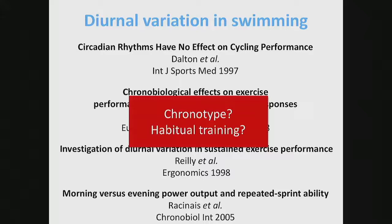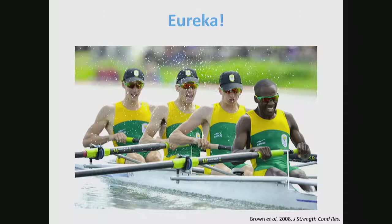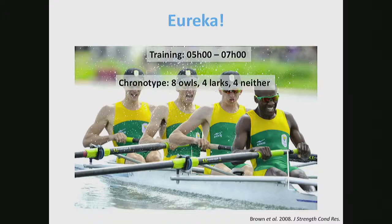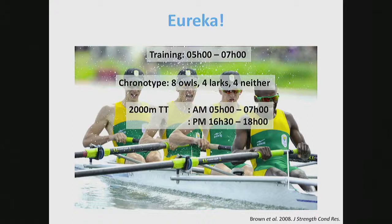My two questions were: what about chronotype, and what about habitual training? I read a study published in 2008 - only a pilot study, so one must be careful, but pilot studies are valuable because it's giving you initial evidence that this might be an area deserving further exploration. They looked at college rowers who typically trained in the morning between 5 and 7, but also had one evening training session per week. They chronotyped them: eight owls, four larks, and four neither types - not surprising since they're young adolescents, so we'd expect more owls. They did a 2000 meter time trial on an ergo, which is a very good predictor of performance in the boat.